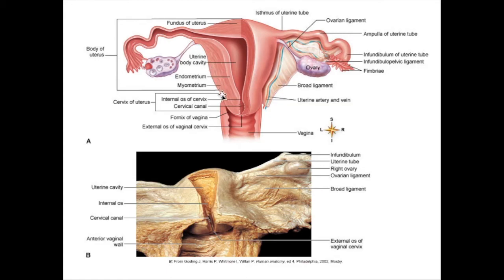And then there is the perimetrium, which is actually continuous with the serous membrane in this region. I'm just looking at the picture on page 632 at all of the structures we're going to be taking a look at here. The one thing I wanted to say that's of particular interest is that the cervix is incredibly important to a pregnancy.